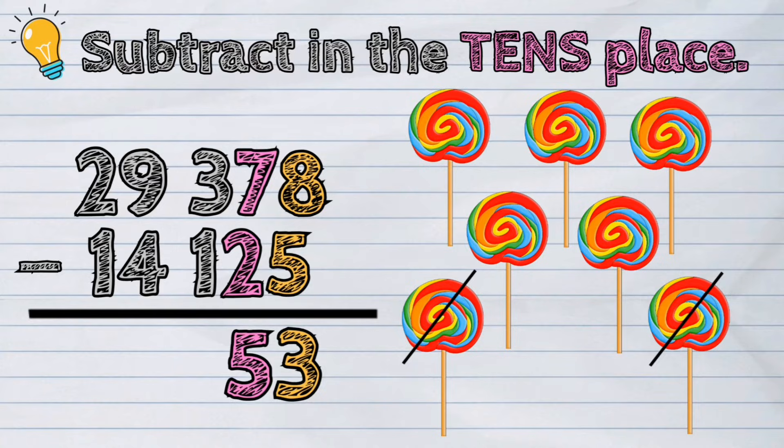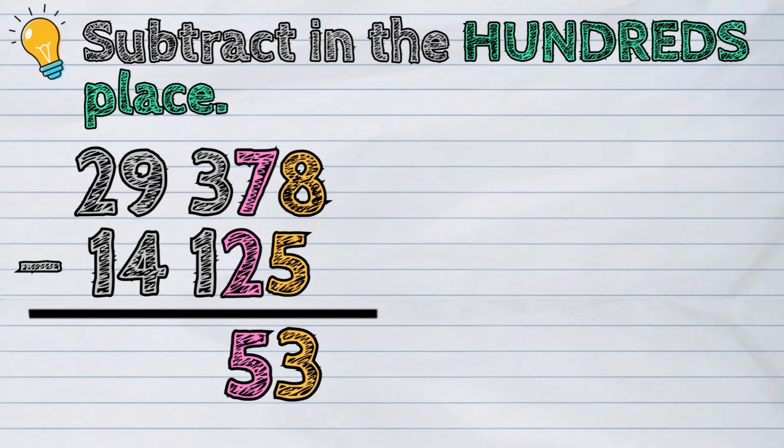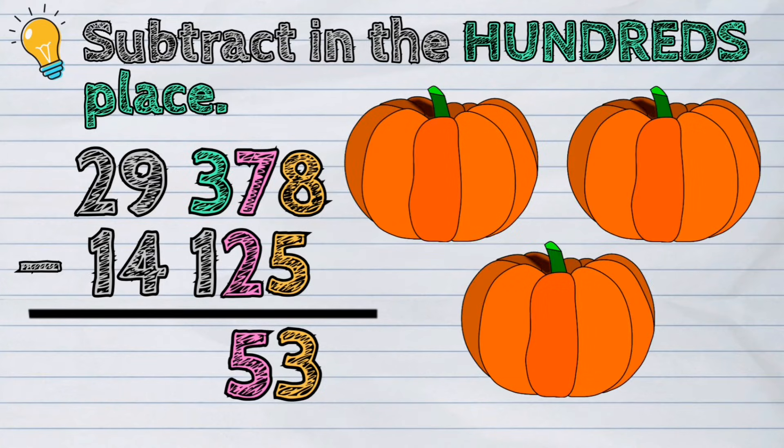Let's proceed now in the hundreds column. 3 minus 1 is equal to 2.